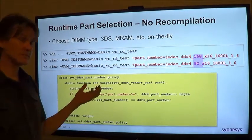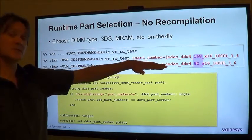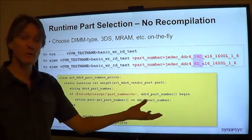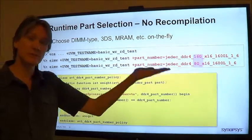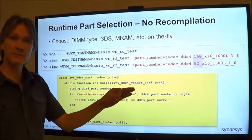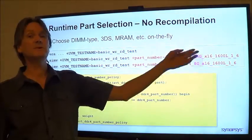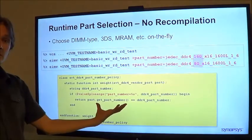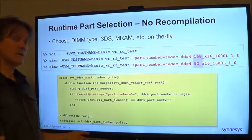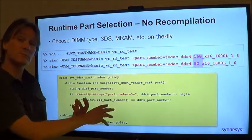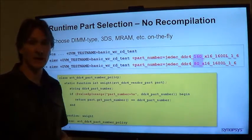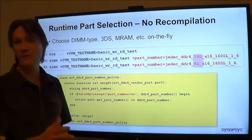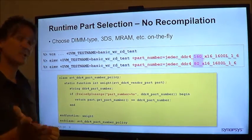We also have the ability with the Synopsys VIP to choose and select on the simulator command line at run time what part we're going to use. So I can choose a UDIMM or I can choose an LRDIMM or an RDIMM. I can choose densities, speed bins, whatever on the part. I can essentially select a catalog part from the catalog on the command line. I can also randomize — say pick a random part from the catalog, or pick a random UDIMM of a given speed bin from any vendor, with ECC or not.